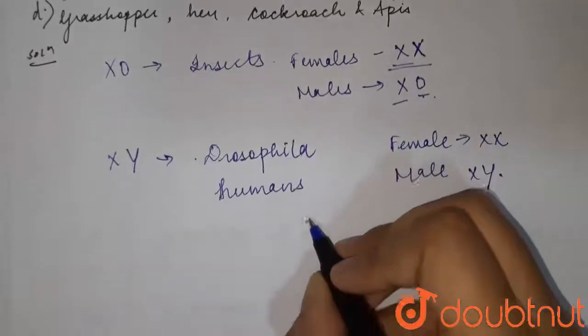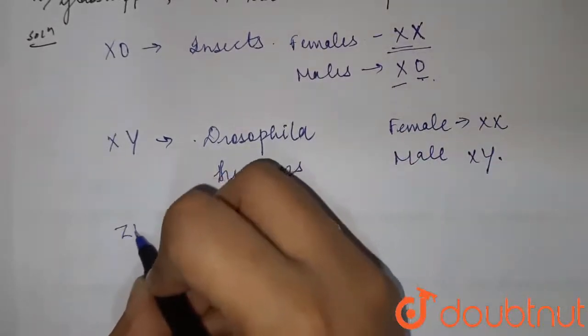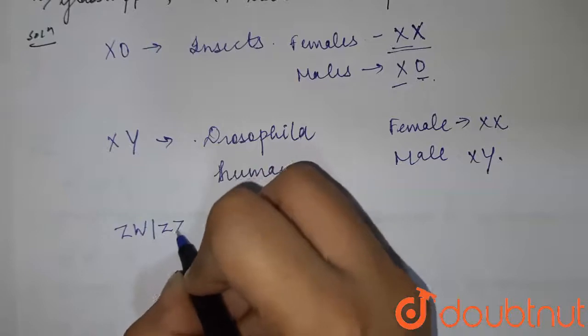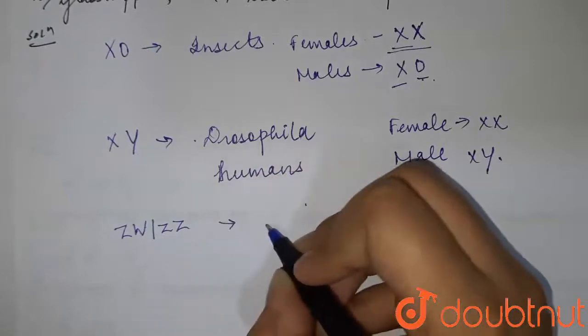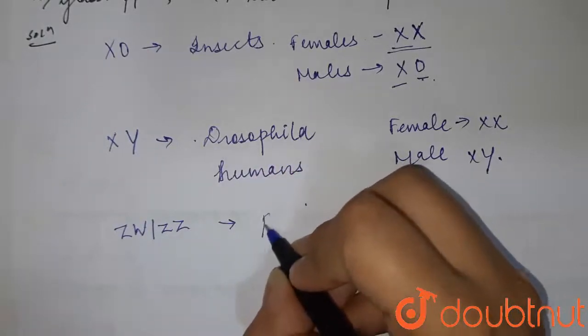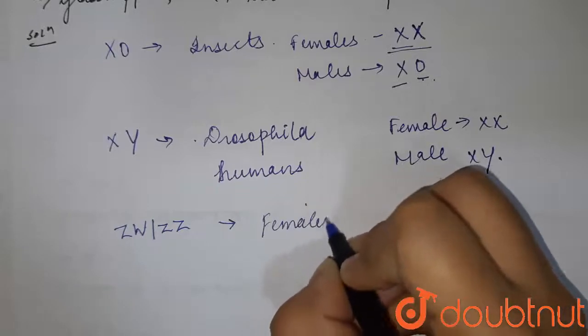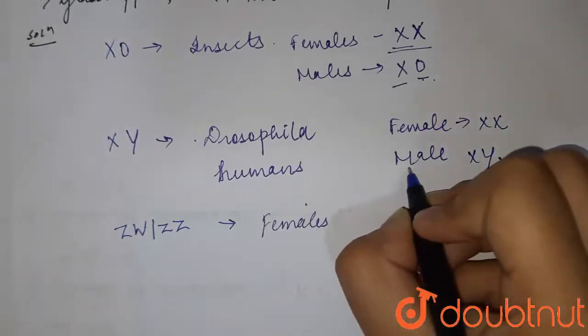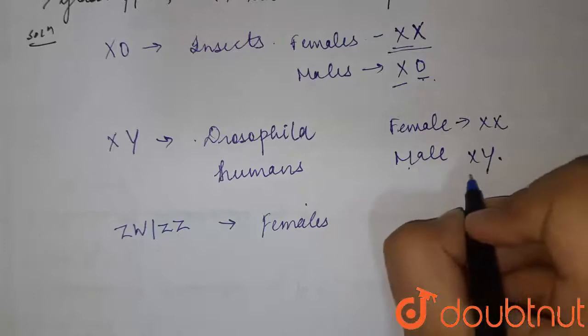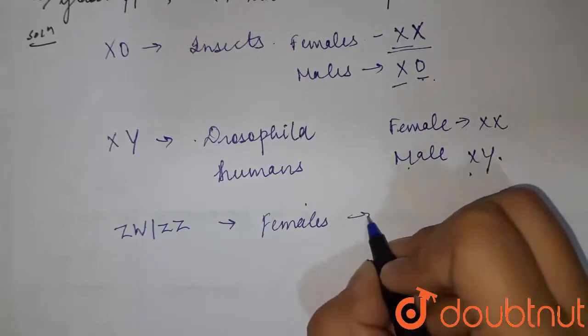If you talk about ZW or ZZ, the females in this are heteromorphic. In XY you have seen that the males were heteromorphic, but in this, females are heteromorphic.